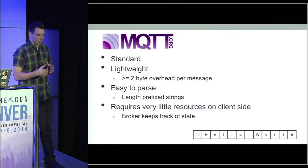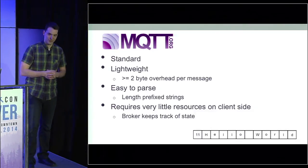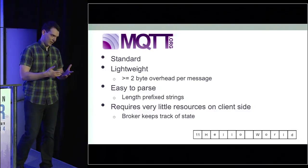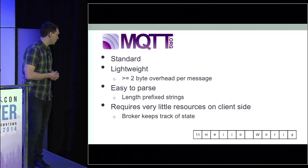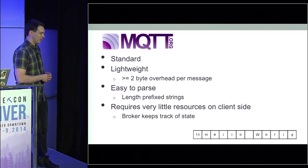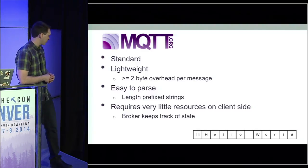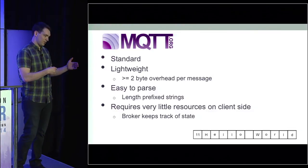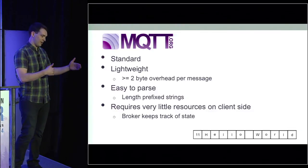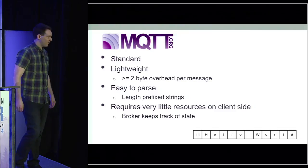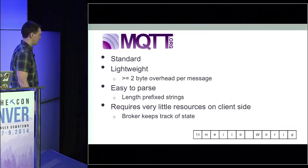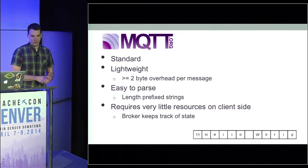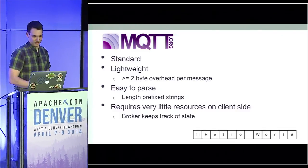By easy to parse, I don't mean for humans — HTTP is easy to parse for humans because it's just plain text headers. MQTT is easy to parse by computer. One of the reasons is something called length prefix strings. When you're reading through the network packet, you come to the length first and can make an array — you know exactly how much data you need to read in. That actually helps a lot in a constrained environment, especially when you only have 2 to 4K of memory available total.